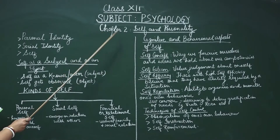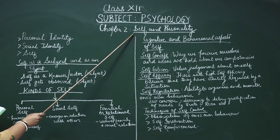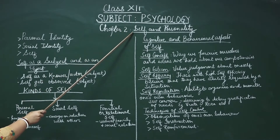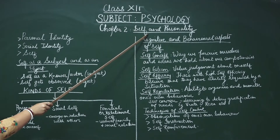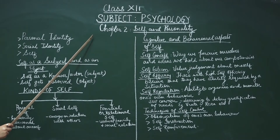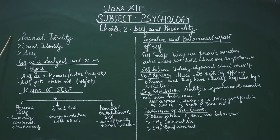Chapter 2: Self and Personality. Students, the study of self and personality helps us to understand ourselves as well as others. An individual's self develops through social interactions with significant others. Let us come to some vital terminologies: personal identity, social identity, and self.